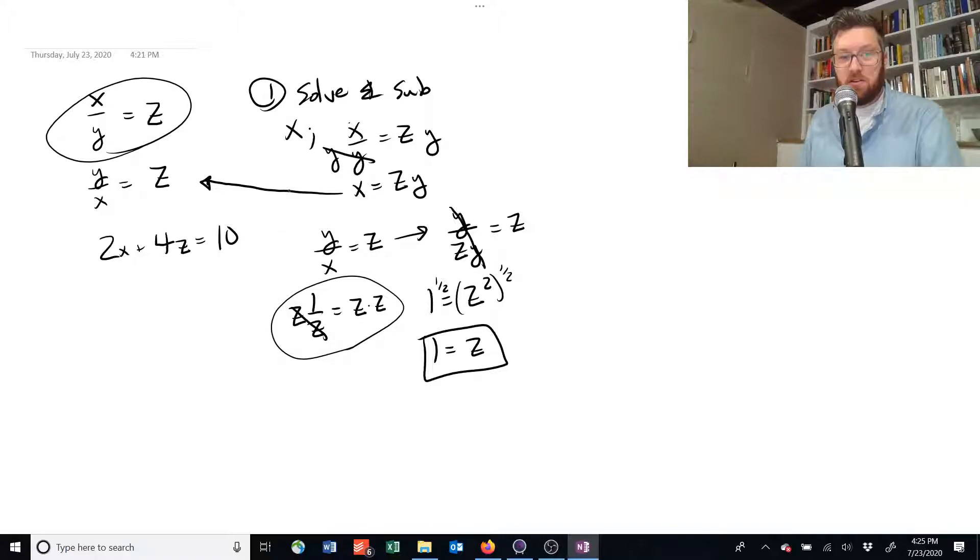Let's plug this answer down here and see what we can find using this piece of information, and now this piece of information. So instead of x, we'll write 2 times zy, and then times 4 times z equals 10. And we know z is equal to 1, so we can change this to 2 times y, and that z is equal to 1, plus 4 is equal to 10.